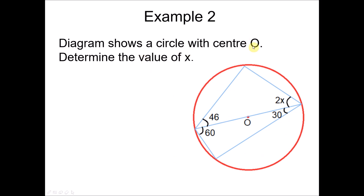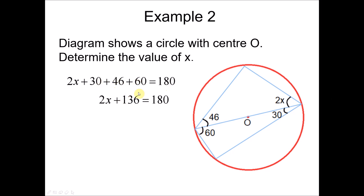Example 2: the diagram shows a circle with center O. Determine the value of X. There is a line which divides the angle into 2X and 30, and 40 and 60 on the other side. The total of these angles plus the total of the opposite angle is still 180 because this is a cyclic quadrilateral. So 2X plus 30 plus 46 plus 60 equals 180. Solving: 30 plus 46 plus 60 is 136, so 2X equals 180 minus 136, giving X equals 22 degrees.